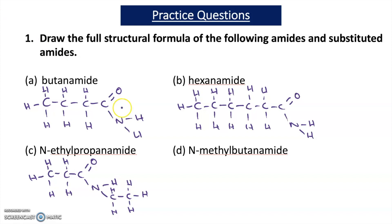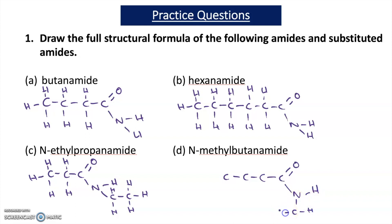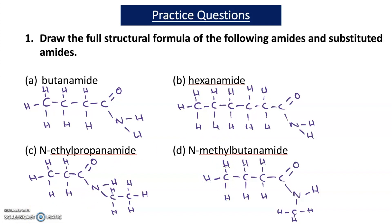For part D, I draw N-ethyl butanamide by first drawing four carbons, then C=O, then nitrogen. Instead of NH2, an ethyl group replaces one of the hydrogens — N-ethyl butanamide. Filling in the hydrogens ensures each carbon has four bonds, giving the final structure, which is a substituted amide.